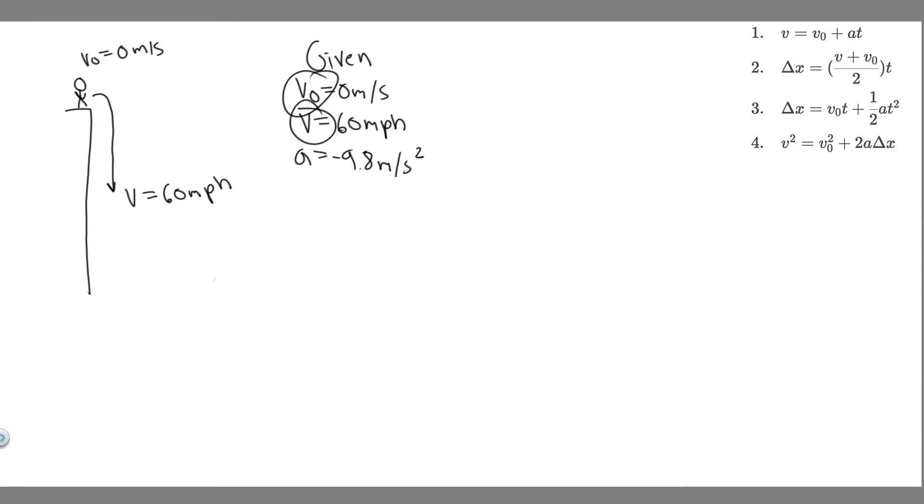And so we know V sub 0, we know V, and we know A. And so we have three different kinematic variables, and what we're trying to do is solve for T. And so we're going to solve by using one of the kinematic equations. If you look here, we have V sub 0, we have V, we have A, and we're trying to find T. And so if you look,